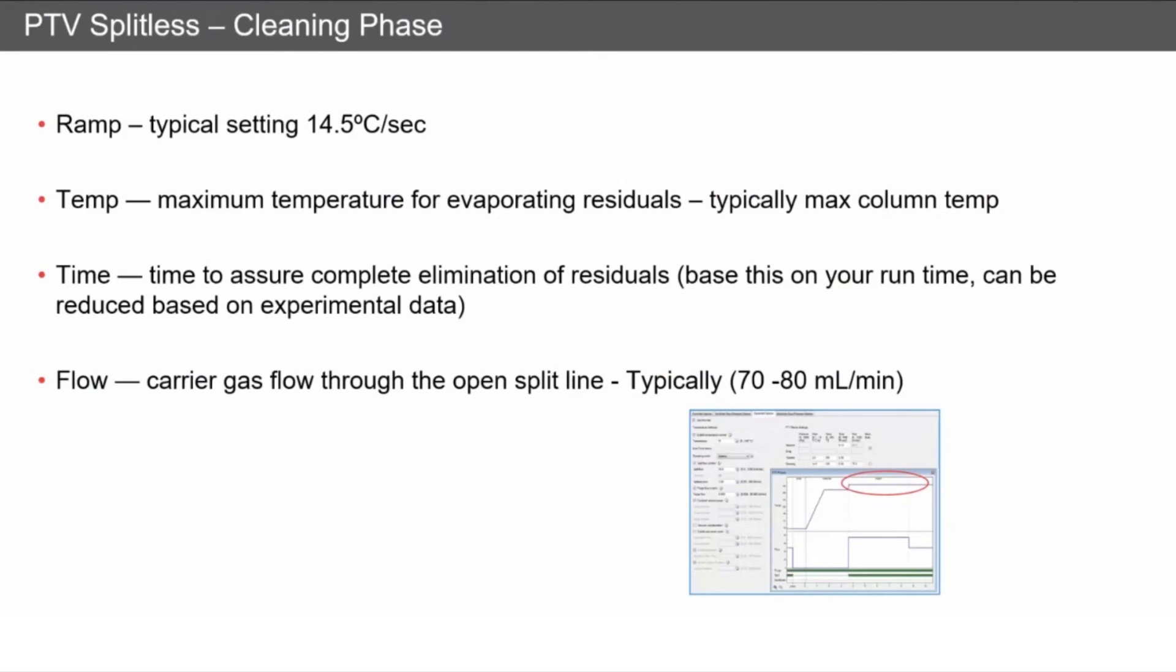The flow—this is the carrier gas flow through the open split line. You want this to be high, encouraging all of these non-volatiles to leave your inlet. Set this to around 70 to 80 mL per minute.